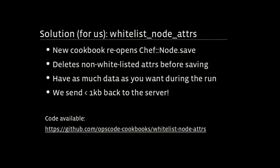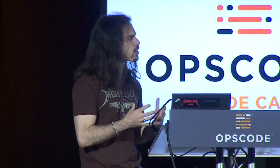The solution for us was whitelist node attributes, which is now an open source cookbook, but did not exist when we sat down to deploy Chef. Adam Jacob and I sat down and worked through how Facebook might use Chef, and we wrote this thing through many iterations. The final iteration reopened the save method on the node object, deleted everything that wasn't in a whitelist, and then ran the original node save. Really super simple. We actually send less than a kilobyte of data from every one of our machines back to the server now.